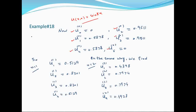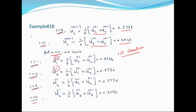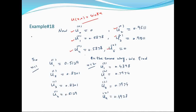n=0 पर आई initial condition values यहाँ put कर देंगे। Indices: u₀₀ पर 0, u₁₀ पर 0.2, u₂₀ पर 0.4 आदि। Numerically calculate करने पर n=1 के लिए u₁, u₂, u₃, u₄ की values आ जाएंगी।